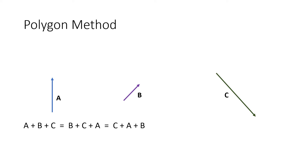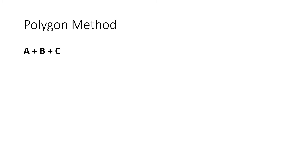Let's say we're going to do the addition of vectors A plus B plus C, which is also equal to B plus C plus A, and it is also equal to C plus A plus B. Let us now do the polygon method — the addition of vectors. Let's do first A plus B plus C, so we make sure that there will be no change in magnitude and direction for each vector.